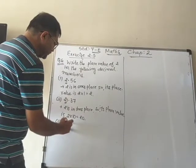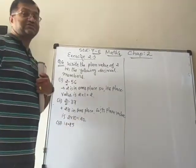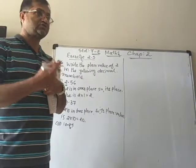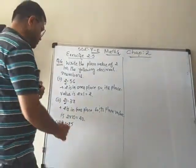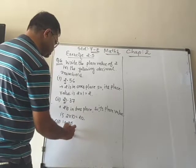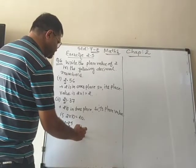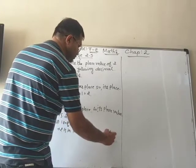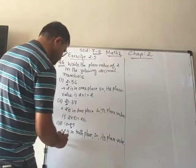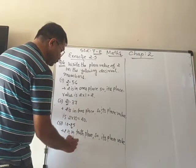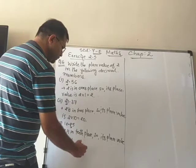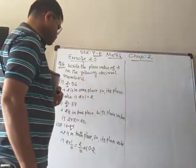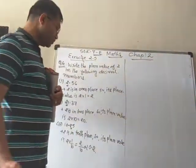The third number is 10.25. This time, digit 2 is on the right of the decimal. The first place to the right is the tenths place. So 2 is in the tenths place, and its place value is 2 × (1/10) = 2/10, or you can write 0.2.